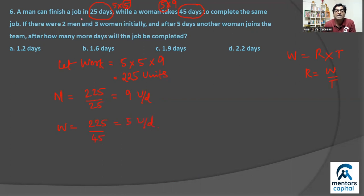So 225 units we assume. Man ka rate M will be work is equal to rate into time, so rate is work upon time, which means man's rate will be 225 upon 25, that's 9 units a day. And woman's rate will be 225 upon 45, that's nothing but 5 units a day.